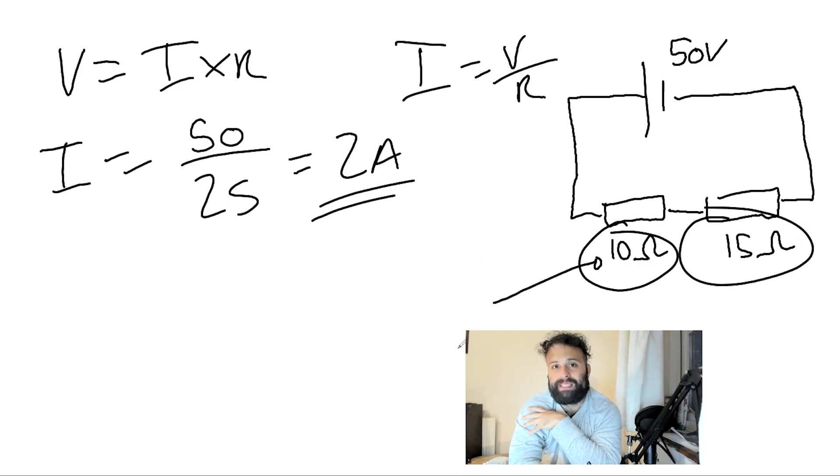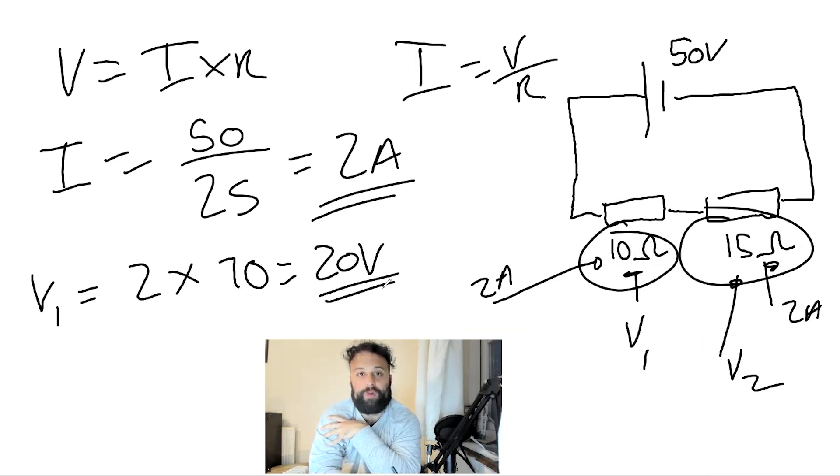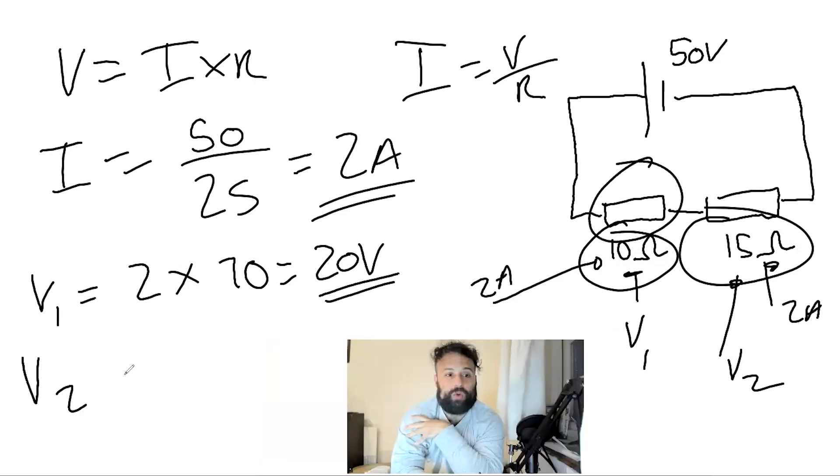So 2 amps passes through this, and 2 amps passes through here. So I'm going to find out what the voltage over here is, which I'll call V1. And I'll find out the voltage that passes through here, I'll call it V2. So V1 is equal to the current, which is 2, times by the resistance of that section, which is 10. Times them both together, I get 20 volts that goes through that V1. V2 is equal to the current, times by the resistance, 15, which gives me 30 volts.